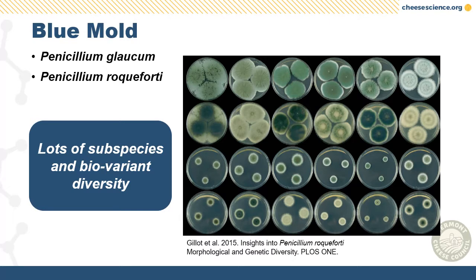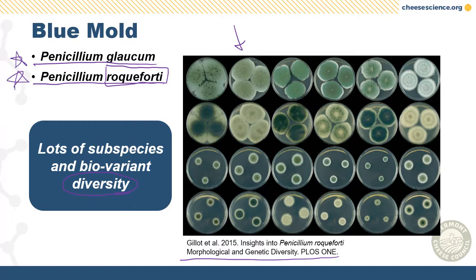You can't make blue cheese without blue mold. The two main species used are Penicillium glaucum and Penicillium roqueforti — and yes, roqueforti is named after the cheese, not the other way around, which demonstrates how the scientific world draws from the food world. This image from a scientific journal shows examples of all the different Penicillium molds available to cheesemakers, both commercial and environmental. The point is there's lots of variation and diversity in molds. There are subspecies, bio-variants, and sub-subspecies that you purchase from culture houses.